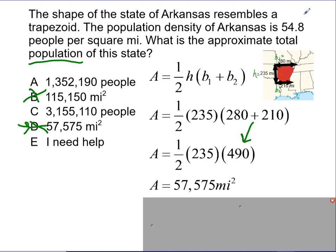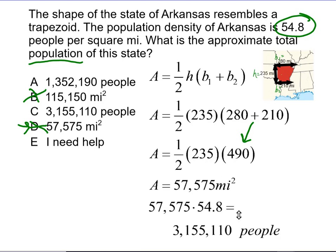The problem told us the population density is 54.8 people per square mile. I have 57,575 square miles, so I just multiply these two numbers together and I get 3,155,110 people in the state.